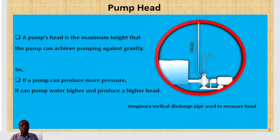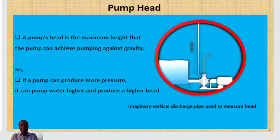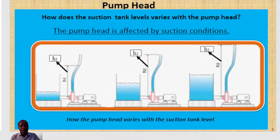That height to which a particular centrifugal pump can raise the water to is called its head. If a pump can produce more pressure, it can pump water higher and therefore produce a higher head. So that maximum height that the pump can achieve pumping against gravity is what is referred to as the pump head. Now, I want you to see how this pump head varies with your suction tank level, because this has a huge impact on your pumping operations.